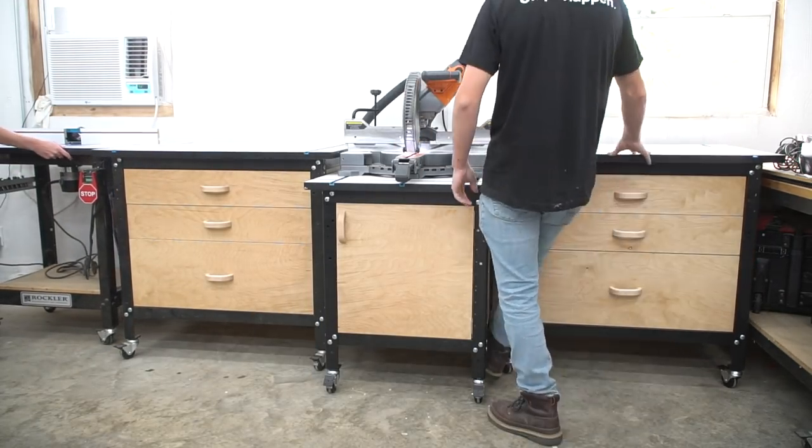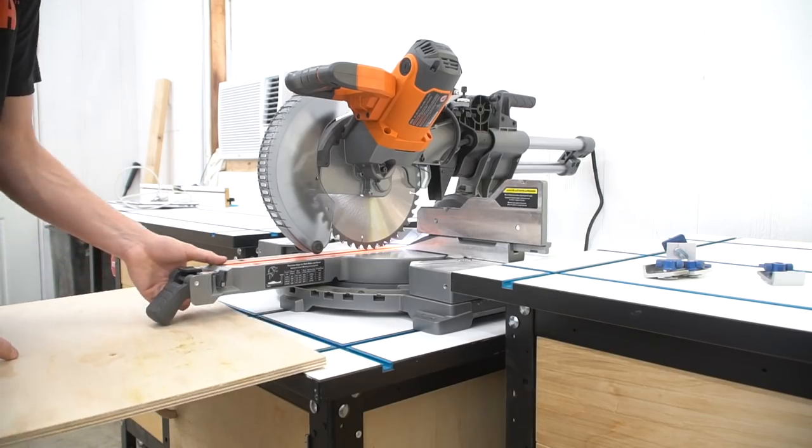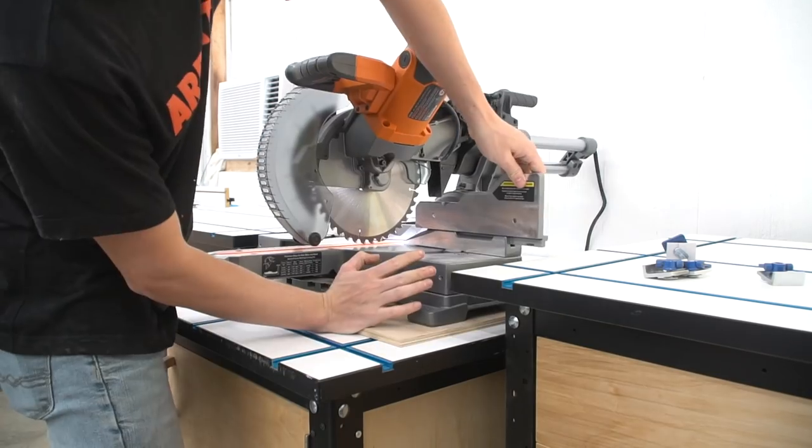We slid the stands in place and found the miter saw needed to be lifted about a half inch to be flush with the side tables. We slid a piece of ½ inch plywood under the saw and secured it with screws.